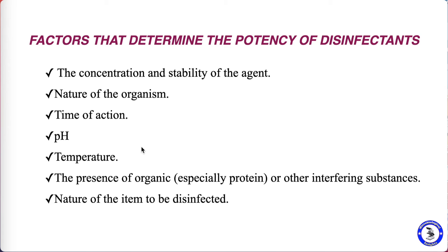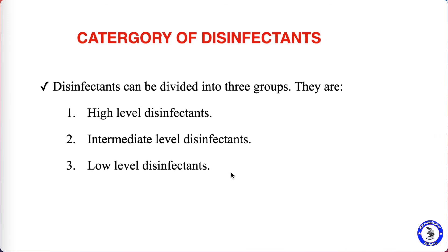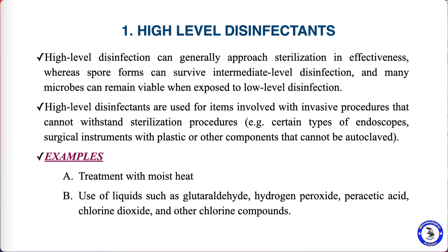Disinfectants are mainly divided into three groups: high level disinfectants, intermediate level disinfectants, and low level disinfectants. In high level disinfection, sterilization is very effective — it can kill all microbes including spores. Some spore forms may escape intermediate level disinfection, and some microorganisms may remain viable after low level disinfection. High level disinfectants are mainly used for items involved in invasive procedures that cannot withstand standard sterilization.